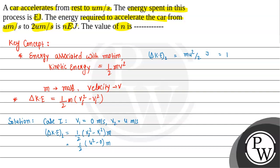Now let's look at case 2. In case 2, the initial velocity is U meter per second and the final velocity is 2U meter per second. We will again find the change in kinetic energy for the second case. This will be half of m times (V2 squared minus V1 squared).